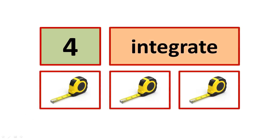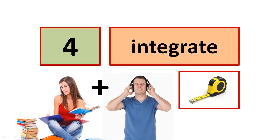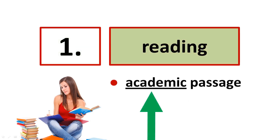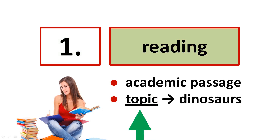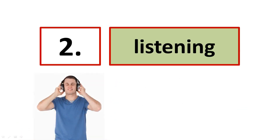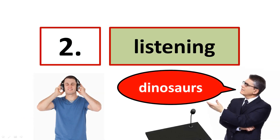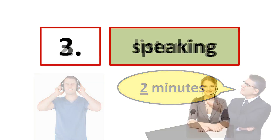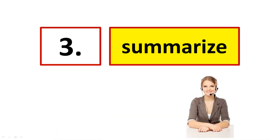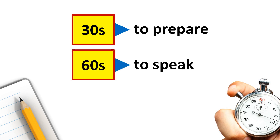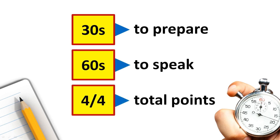Next is speaking task 4. This task measures your ability to integrate three skills: reading, listening, and speaking. Step 1 is reading — the reading is a short academic passage; the topic might be about dinosaurs, and you will have 45 seconds to read it. Step 2 is listening — you will listen to a professor lecturing on the same topic as the reading, lasting about two minutes. Step 3 is speaking — you will summarize how the reading and the listening topically integrate. You will have 30 seconds to prepare and 60 seconds to speak. This task is scored out of four total points.